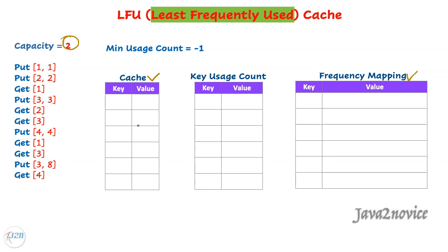Rather than storing a raw value into this hash map as-is, we can store a linked list node as a value so we can keep track of each key's usage count within the node itself. Then we can easily identify which linked list the node is part of, and relate the two hash maps. Here we have count as a key and linked list as a value. If we know the count, then we can directly identify the respective node's linked list in this hash map.